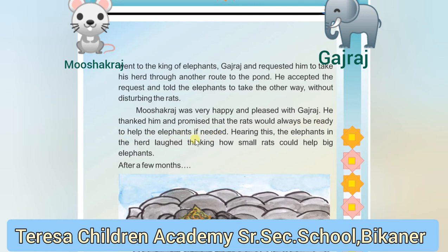Mushak Raj said that he thanked Gaj Raj, and reminded him that if it was ever necessary, he would always be prepared to help the elephants. Gaj Raj laughed, thinking how small rats could ever help big elephants.